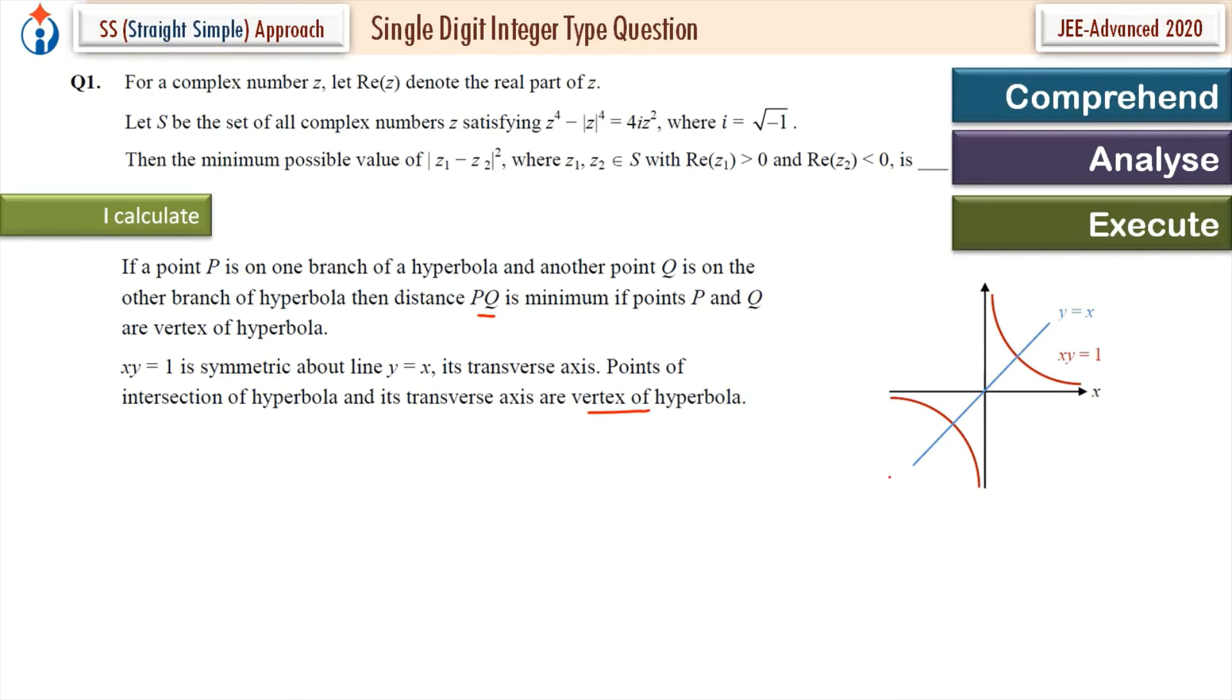So Y equal to X line here. So we just solve them. XY equal to 1 and Y equal to X. So we get this point P, this point Q. Coordinates are 1, 1 and Q is equal to minus 1, minus 1.